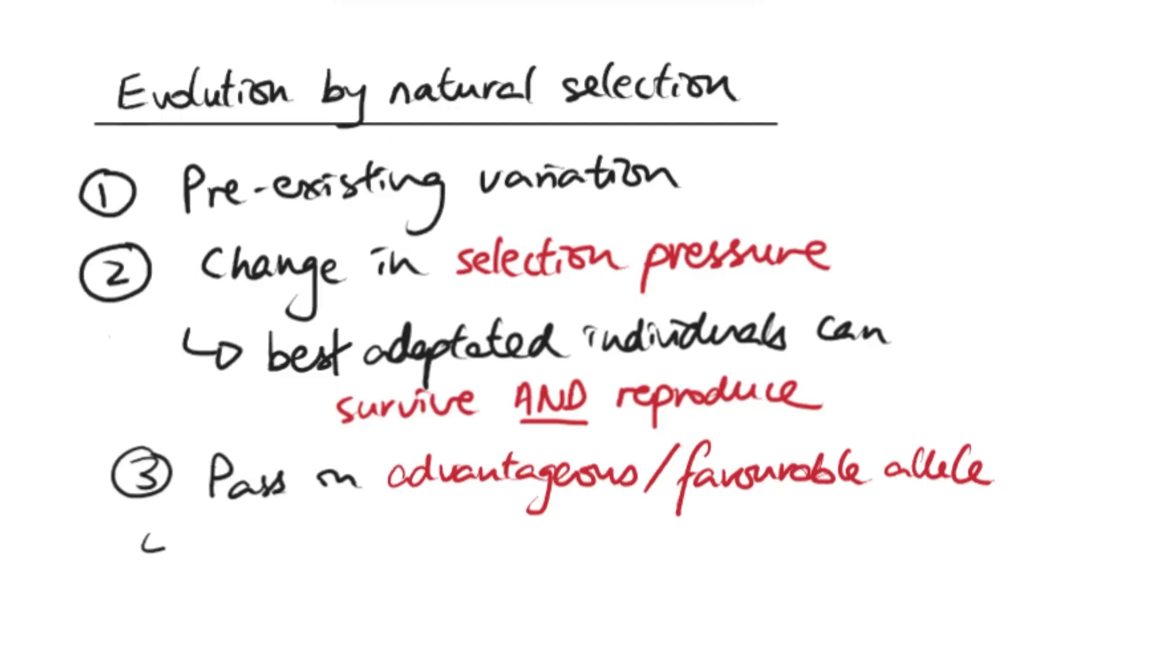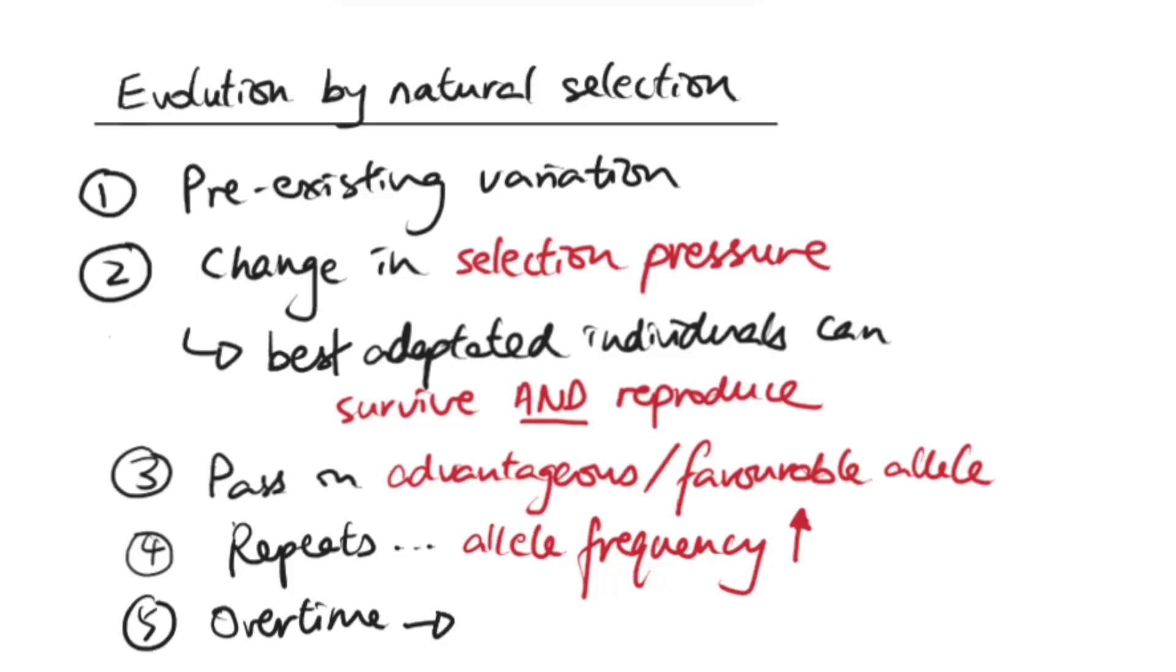And this would be repeated over many generations. Over time, as it repeats, you would increase what we call the allele frequency. The allele frequency is referring to the number of that particular favorable allele within the population. So the idea is that more and more individuals would have that same allele, more and more individuals have that same adaptation to allow them to survive. And if this continues over time, it can actually lead to what we call speciation, when a new species is formed.